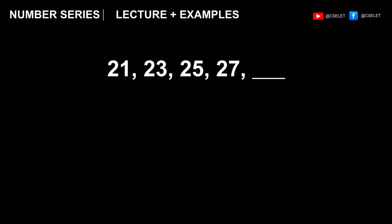So we have 21, 23, 25, and 27. So clearly, the numbers are ascending and the numbers are not that far apart. So let's try to add them by 2. So 21 plus 2 is 23. 23 plus 2 is 25. 25 plus 2 is 27. Therefore, 27 plus 2 is 29. 29 is the correct answer.